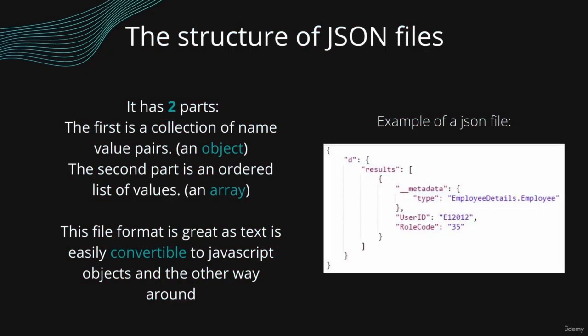When talking about the structure of a JSON file, it only has two parts in its entire structure. The first part is a collection of name-value pairs. In various languages this is realized as an object, record, struct, dictionary, or hash table. It can also be a keyed list or an associative array.